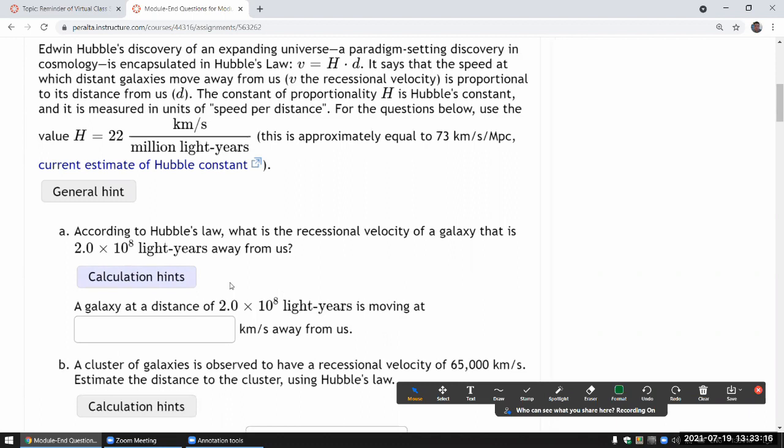So for part A, we are given the equation that's in perfect form for answering exactly this. Because what I'm looking at is this: what information do we know, and what information are we asked for? Now, the information that we know is this, the Hubble constant. We are given what value to use.